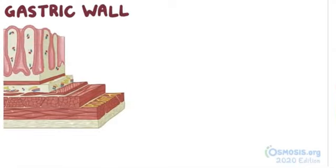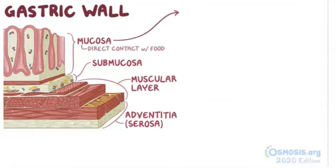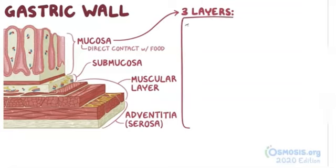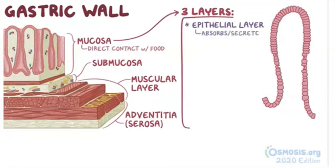The gastric wall is made up of four layers. From the outside in, there's the adventitia or serosa, the muscular layer, the submucosa, and the mucosa. The mucosa comes into direct contact with food, and it also has three layers of its own. The innermost layer is the epithelial layer,